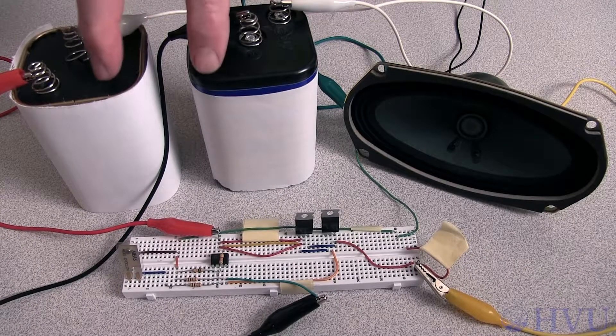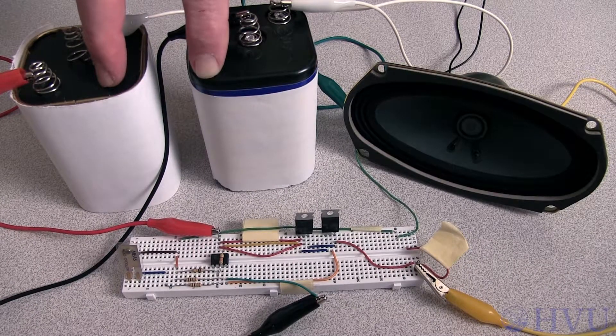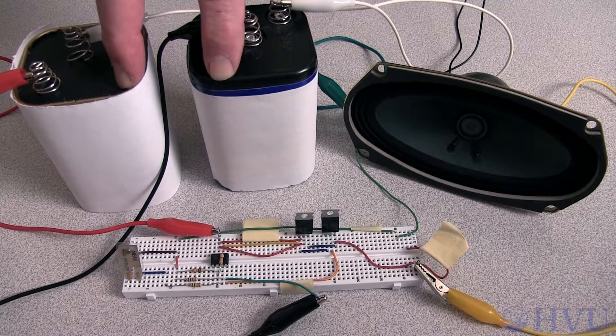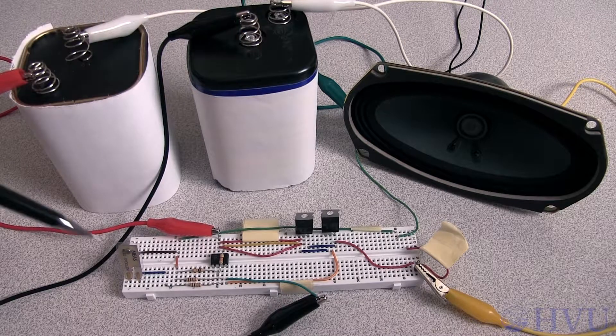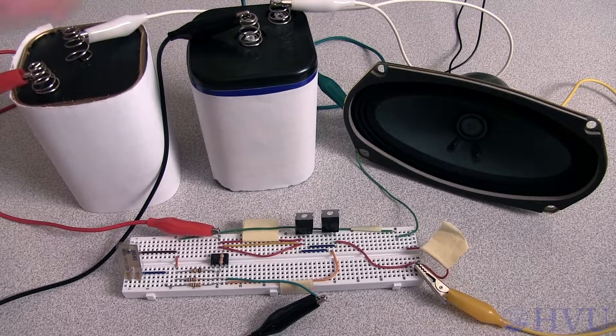I've used these 6-volt lantern batteries to provide power to both the preamplifier and the amplifier circuits. These batteries are where the speaker is actually getting its power from. The voltage being put out by the piezoelectric sensor is just controlling the power provided by the batteries to the speaker.